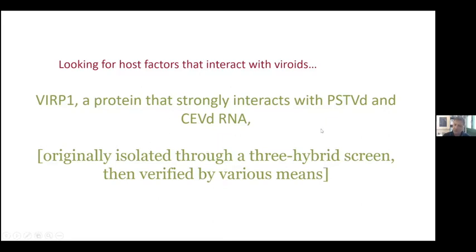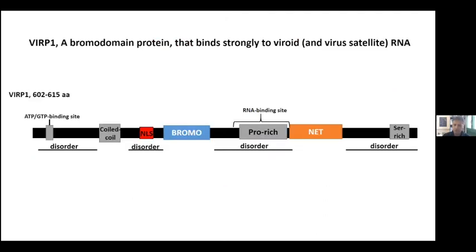We have verified in vivo that VIRP1 does strongly interact with viroids — not only with our favorite viroid but with all the nuclear viroids we have tested. This is a very interesting protein because it's a bromodomain protein. Bromodomains are domains that read acetylated lysine on chromatin, so they are chromatin interactors in some way.